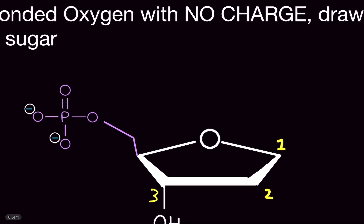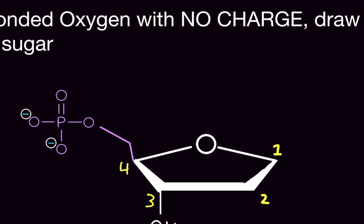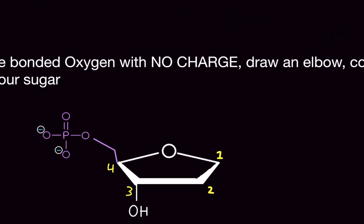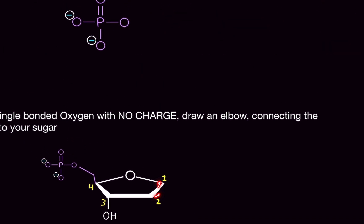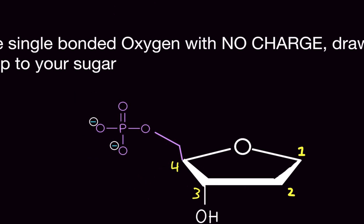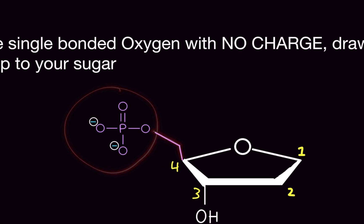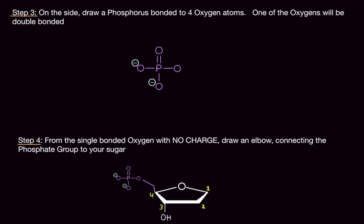So carbon number four is here — one, two, three, four. Draw an elbow: a bond going this way and this way, and it bonds the oxygen, connecting the entire phosphate group to the sugar. And we're already halfway done.